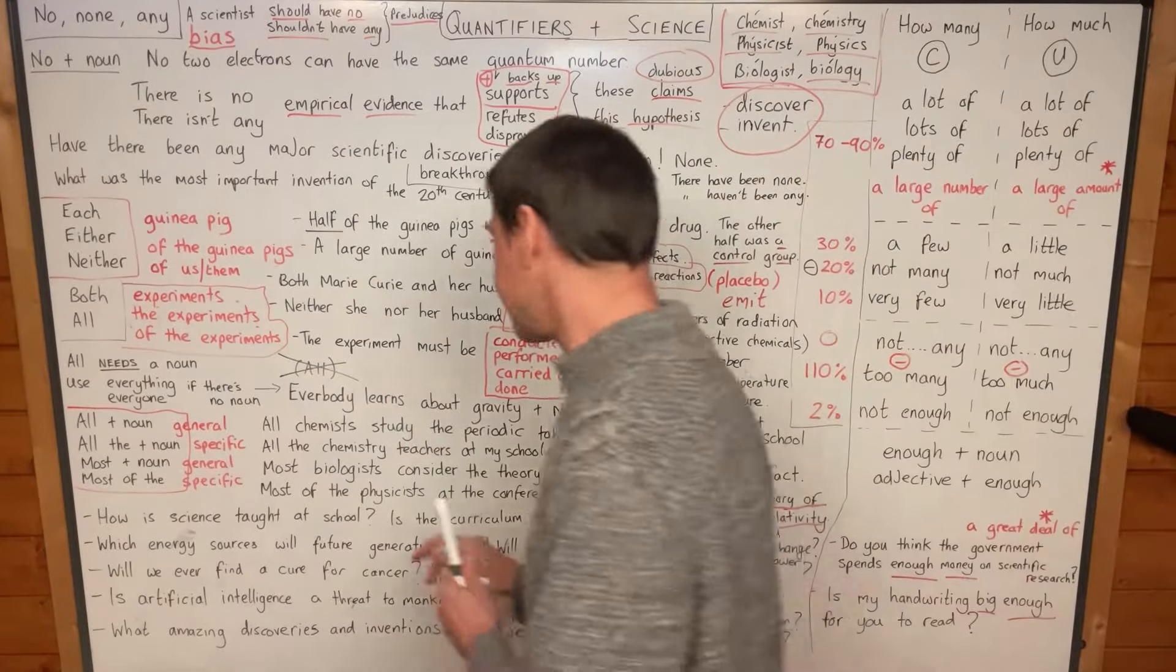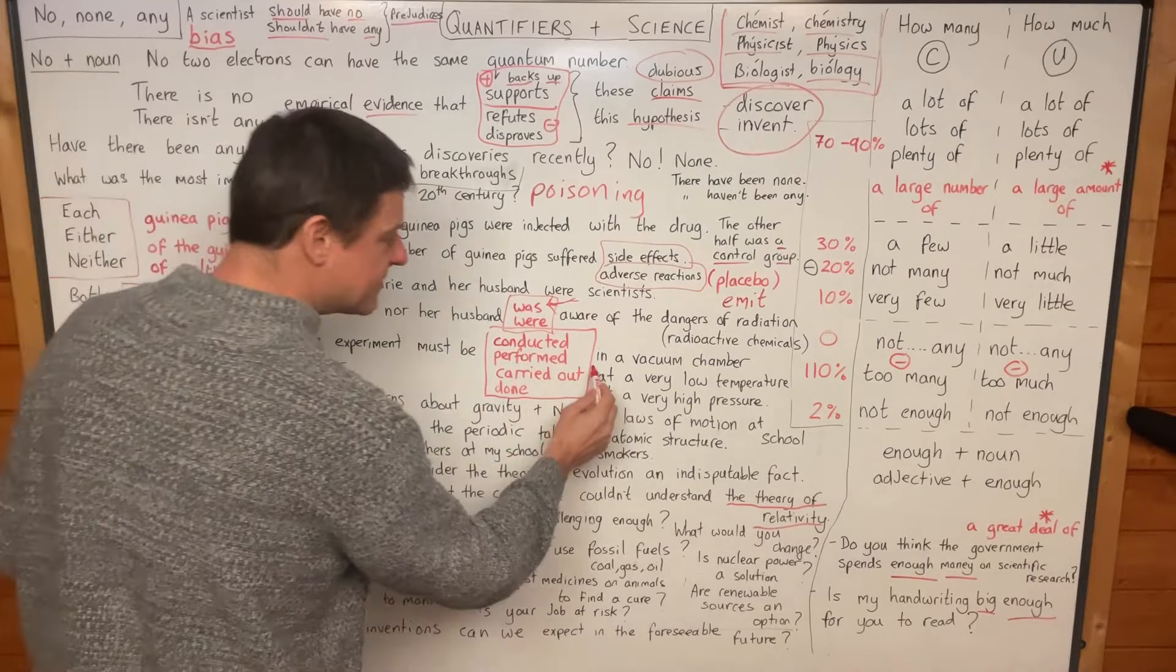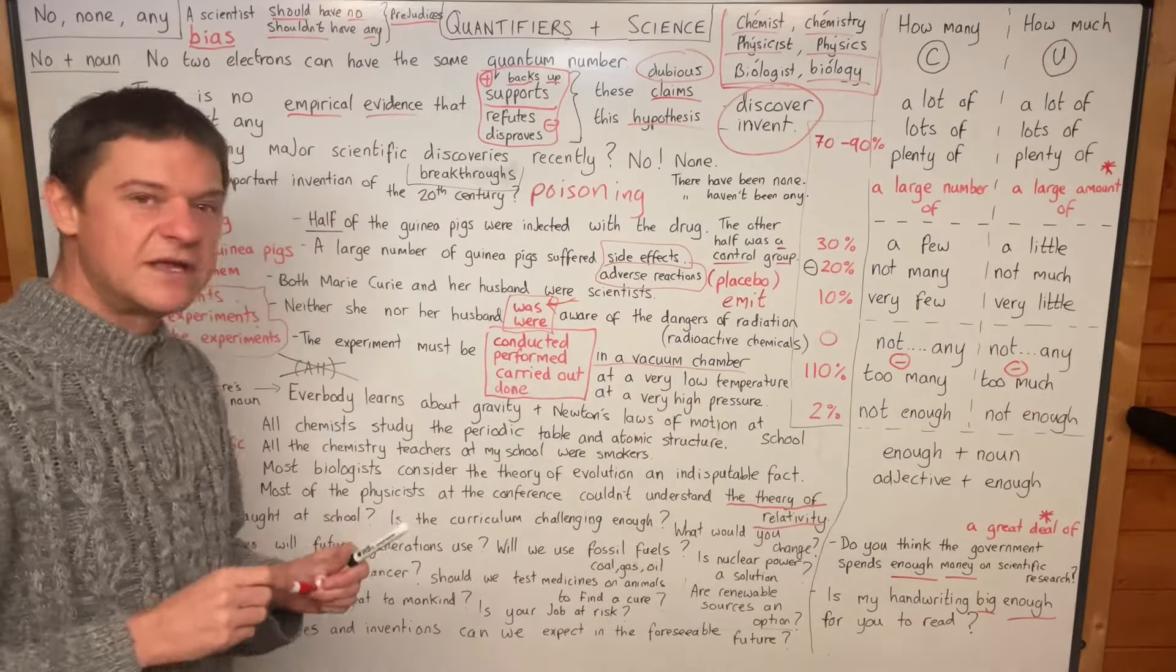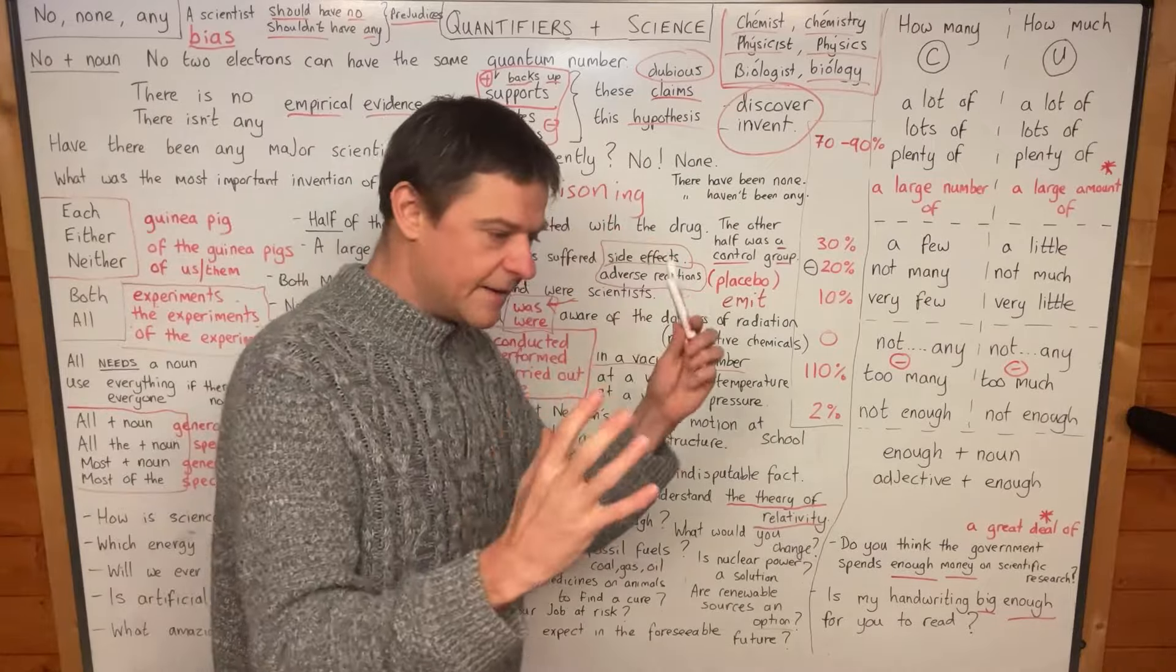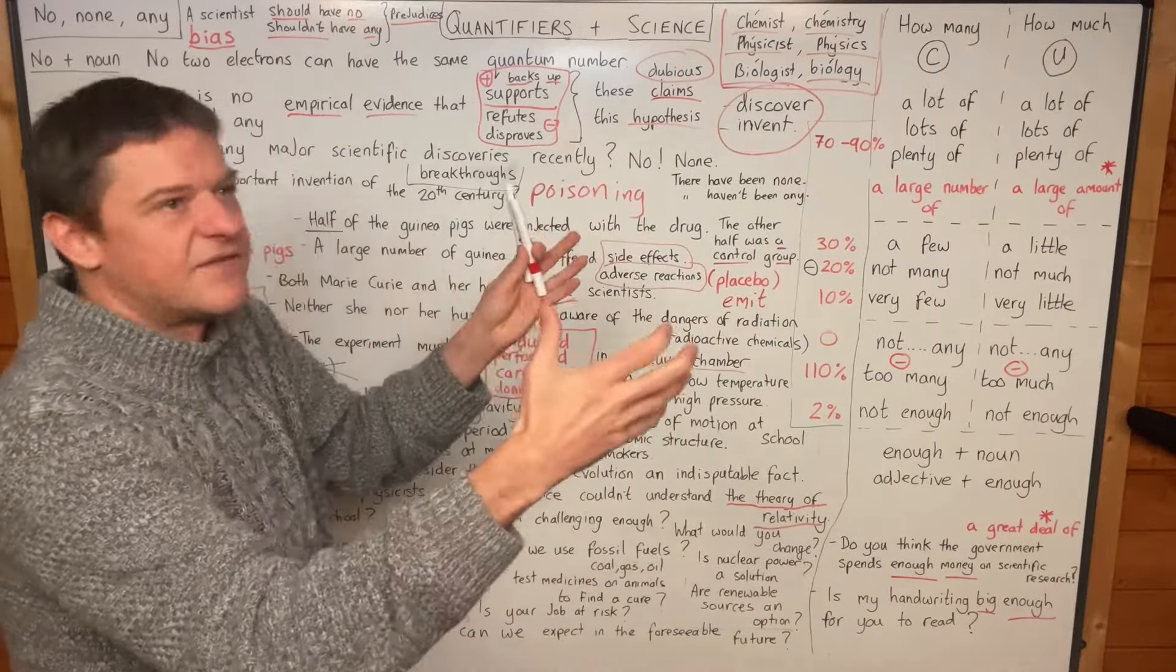And where do they do it? Well, let's have a look. The experiment must be done, must be conducted in a vacuum chamber. That's what we call a small object box. If you do the experiment in the vacuum chamber,